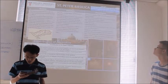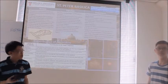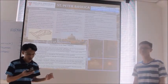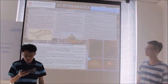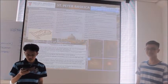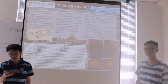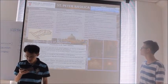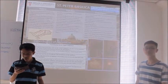He appointed Donaldo Bramante as the chief architect. And so Bramante came up with a structure with a high dome on a brick cross plan. After his death in 1514, he was succeeded by a number of architects, each of whom would make changes to the design.